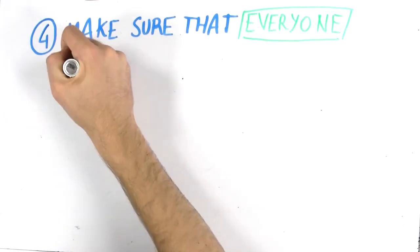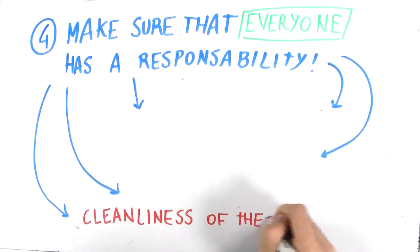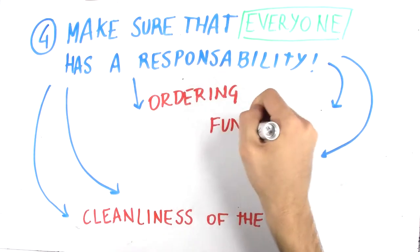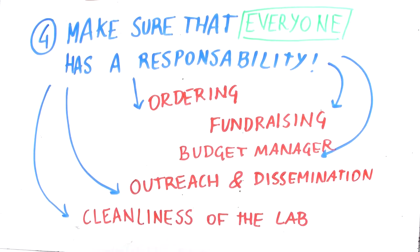Four, make sure that everyone has an assigned responsibility. For instance, in the lab, there should be one person who supervises cleanliness and another person to take care of the orders. You will also need someone to organize fundraising, a team budget manager, and a person in charge of the dissemination of the project.